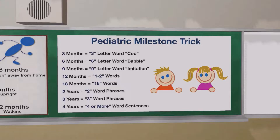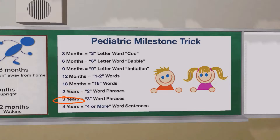By 18 months of age, they should be saying about 8 to 18 words. By two years of age, a child should be saying two-word phrases or sentences. By three years of age, three-word phrases or sentences. And by four years of age, they should be saying four-word sentences.